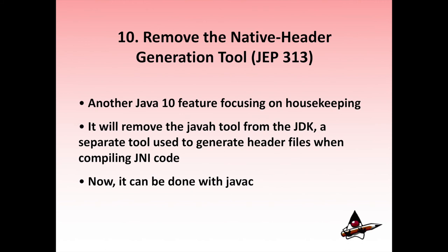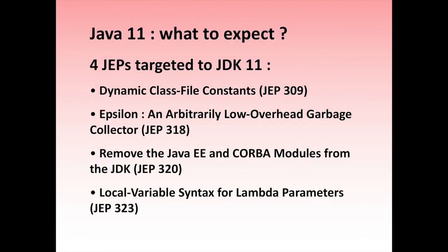Feature 10: Remove the Native Header Generation Tool, in JEP 313. This is another Java 10 feature focused on housekeeping. It will remove the javah tool from the JDK — a separate tool used to generate header files when compiling JNI code — as this can now be done through javac.